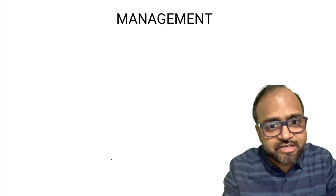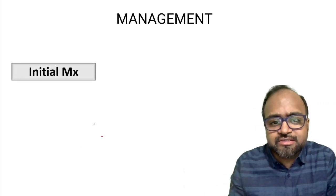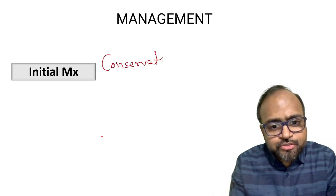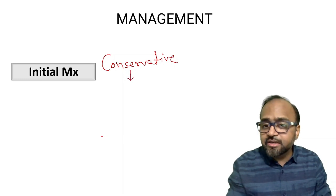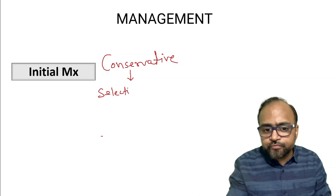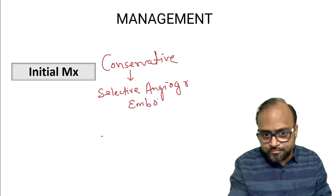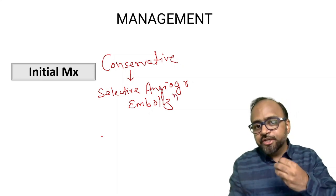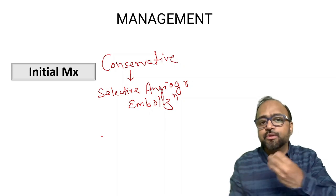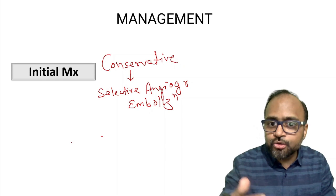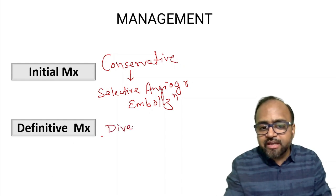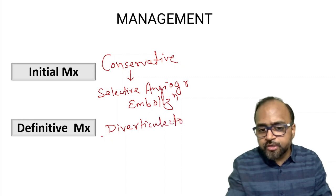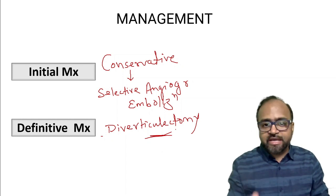What is the management of Meckel's diverticulum? Initial management, as in this case, is usually conservative management, because it is known to be a self-limiting condition and usually does not cause recurrent bleeds. However, if this fails and there is recurrent bleed, then selective angiographic embolization into the distal branches of the superior mesenteric artery supplying the Meckel's diverticulum can be done to arrest the bleeding. If bleeding continues to recur, definitive management is required — and that is Meckel's diverticulectomy, where you surgically remove the Meckel's diverticulum.